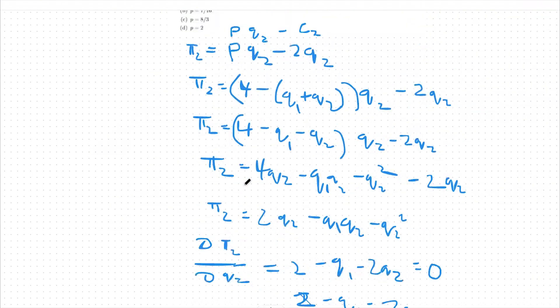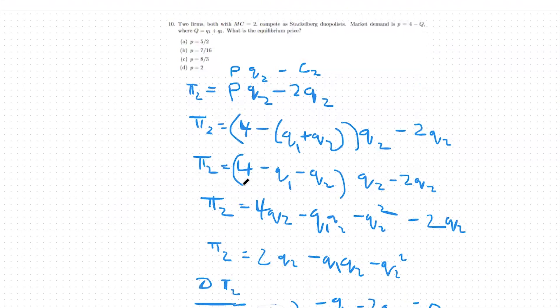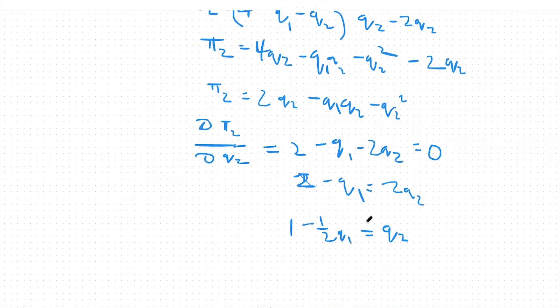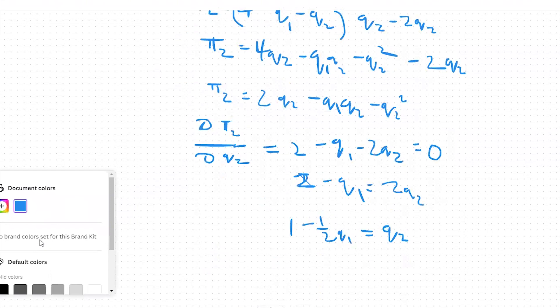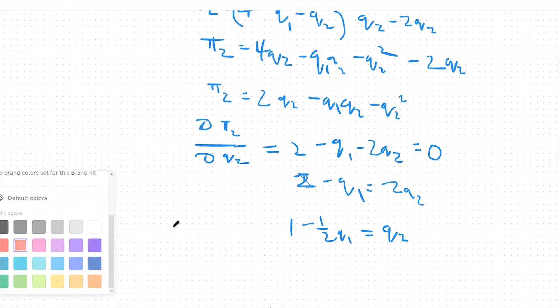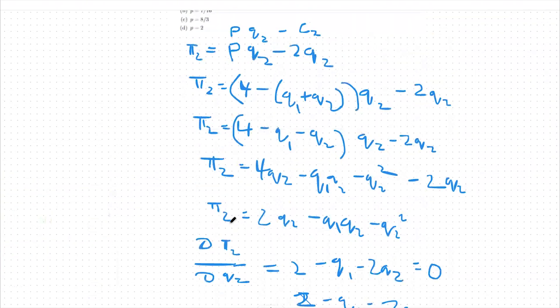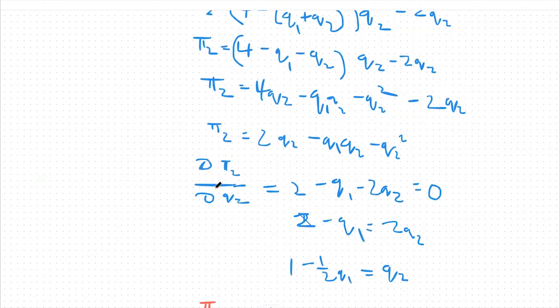Conceptually, we can think about this as all the scratch work that firm one does to figure out what firm two will do. This is firm two's reaction function — firm two is oblivious to what firm one is doing until it's done, so firm one, making the first decision, has time to think about what firm two will do and implement that into their strategy. We can see that exactly in the math. Now we'll switch over to firm one's production.